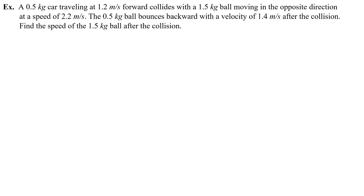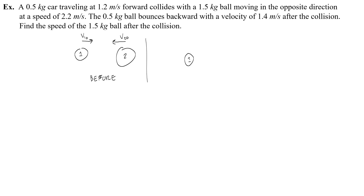Let's do another one. A 0.5 kilogram car traveling at 1.2 meters per second forward collides with a 1.5 kilogram ball moving in the opposite direction at a speed of 2.2 meters per second. Thing 1 is the 0.5 kilogram ball moving with positive velocity v₁₀ of 1.2 meters per second, and thing 2 is the 1.5 kilogram ball moving with v₂₀ of negative 2.2 meters per second in the opposite direction. After the collision, the 0.5 kilogram ball bounces backward with a velocity of negative 1.4 meters per second.